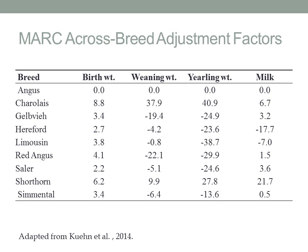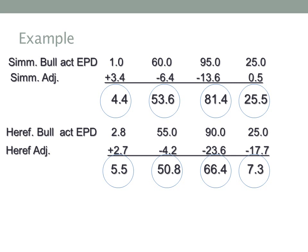Here we have a Simmental bull with EPDs for birth weight, weaning weight, yearling weight, and milk, and we want to compare him to a Hereford bull with EPDs for the same traits. We take the Simmental bull's actual EPDs and add or subtract the adjustments to put them on an Angus base, and do the same for the Hereford bull. Now both bulls are on an Angus base, so we can directly compare their genetic merit for these four traits — comparing apples to apples.